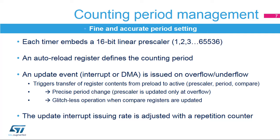An update event is issued when the counter underflows or overflows and a new period starts. It triggers an interrupt or DMA request used for adjusting time parameters synchronously with its period, which is useful for real-time control. This update event triggers the transfer from pre-load to active registers for the clock pre-scaler, auto-reload value, compare registers, and PWM mode. An 8-bit programmable repetition counter allows decoupling the interrupt issuing rate from the counting period, providing one interrupt every single, second, third, and up to 256th PWM periods.